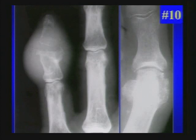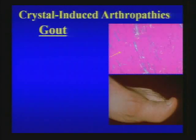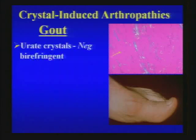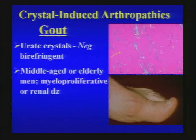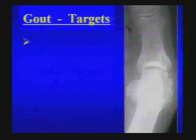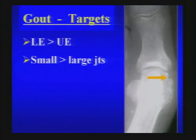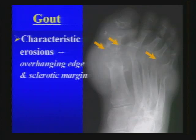Two patients with the same diagnosis: gout. Erosions are very helpful in your systematic approach. Gout is most common in the lower extremity, particularly small joints — possibly related to lower temperature in distal joints. Characteristic sites of erosion are the MTP joints. Look for erosions with overhanging edges, often with a sclerotic margin, and an adjacent soft tissue mass from a gouty tophus causing the erosion.